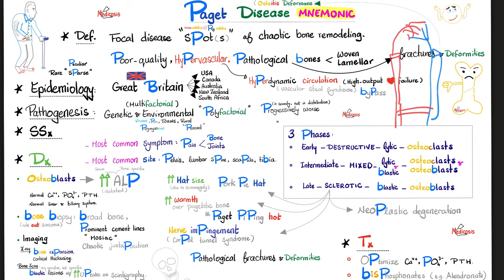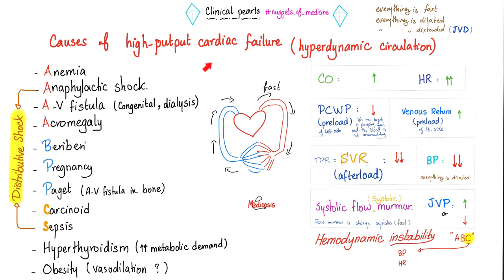Management includes optimizing calcium and phosphate intake, ensuring serum calcium, phosphate, and parathyroid hormone levels are normal, taking vitamin D, and making lifestyle modifications such as diet and exercise. The key medication class is bisphosphonates, which inhibit osteoclasts.